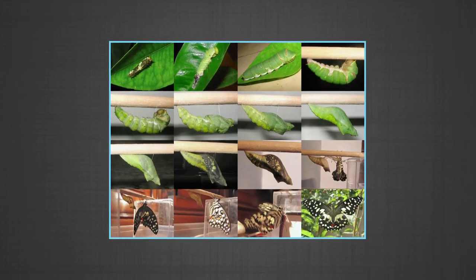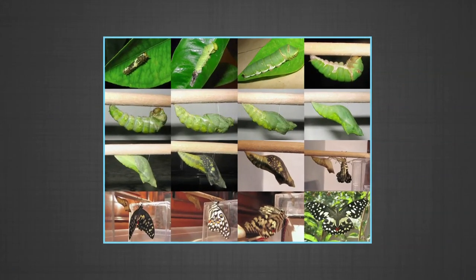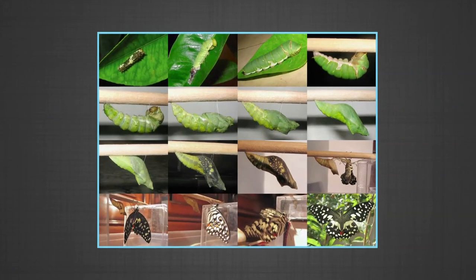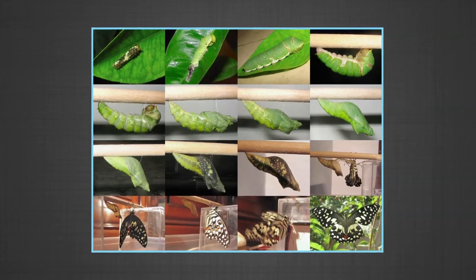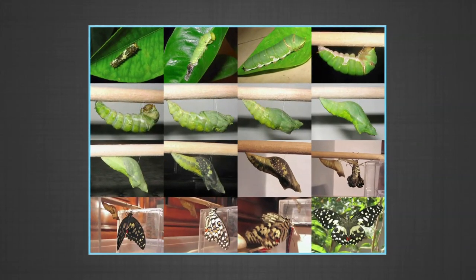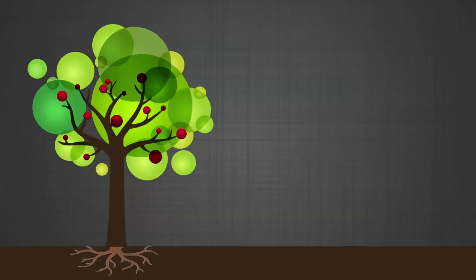Growth and development of living organisms are not the same thing. Growth is the increase in the size and mass of the organism. However, development involves transformation of the organism as it goes through the process of growth. A butterfly, for instance, starts off as a cell, then transforms into a caterpillar, then into a pupa, and then emerges as a beautiful butterfly. Plants often start off from a tiny seed and grow into a big tree.